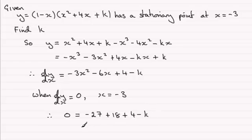If I add k to both sides, we get k = -27 + 18 + 4, which comes to -5. So there's your value of k.